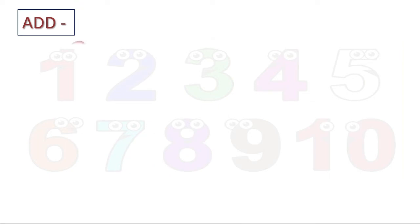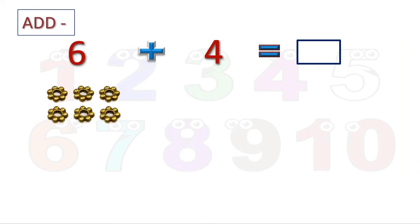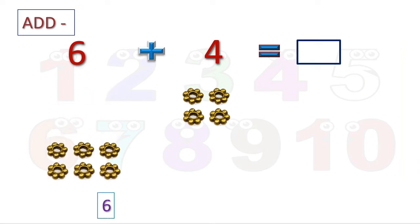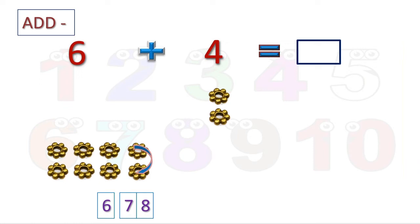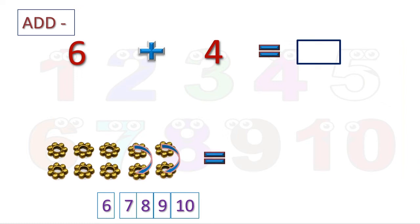Six plus four is equal to how much? Here you can see six golden flowers, and four flowers. There are six earlier, so let us take them. Now we are going to add, so we will count four numbers in forward direction. This is six, then seven and eight, next nine and ten. So all together there are ten flowers. Six plus four is equal to ten. This method is called counting forward method.